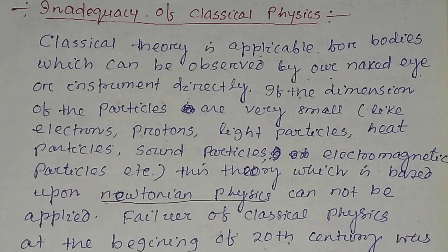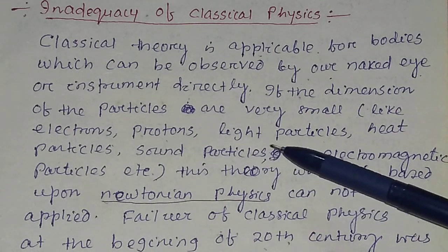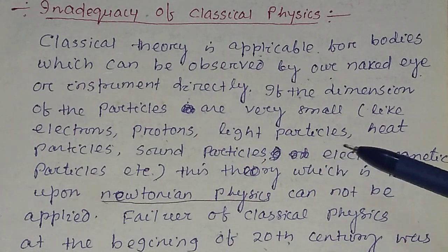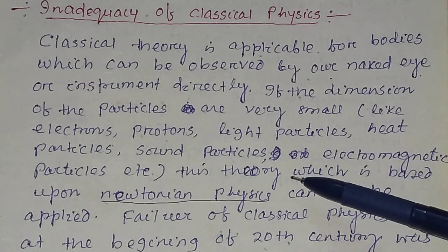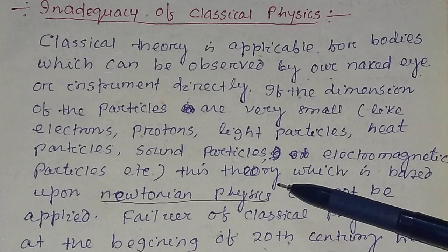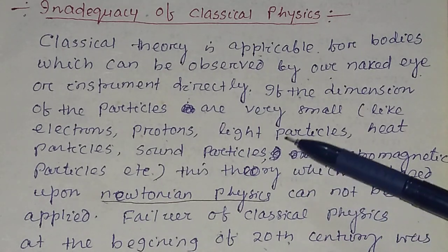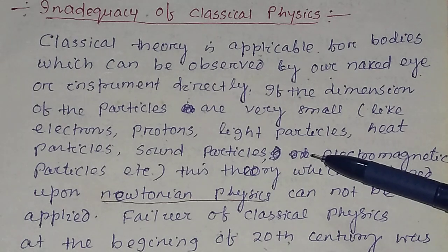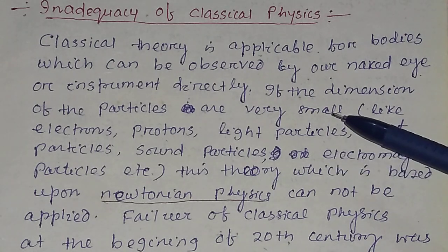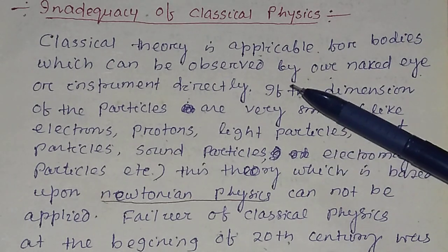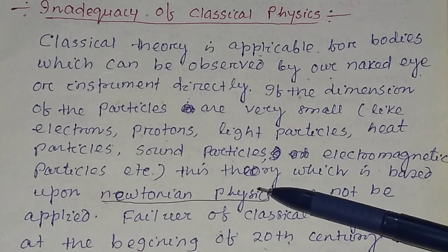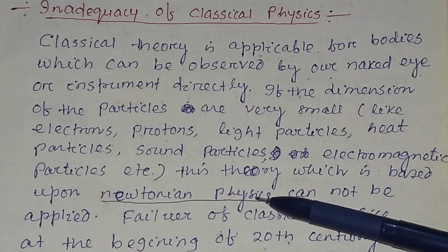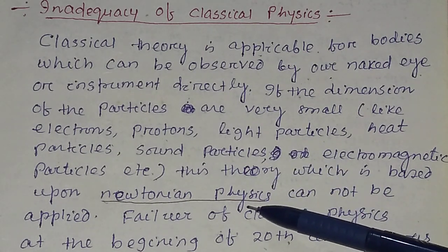Small dimension particles means particles like electrons, protons, light particles, heat particles, sound particles, or electromagnetic particles. In these cases the dimension of the particles is very small. Classical physics, which is basically Newtonian physics, applies Newton's laws of motion, so it is called Newtonian physics.